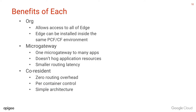Each of these different plans has different benefits. The org plan allows you to have access to all of Edge, and Edge can actually be installed inside the same Pivotal Cloud Foundry environment, which makes the actual latency a little bit less compared to going out to the cloud and back. Micro gateway allows one micro gateway to serve many different applications, doesn't hog application resources because it's a separate application, and has smaller routing latency compared to the org plan. The co-resident plan has zero routing overhead, per container control, simple architecture, and is much easier to understand than how a request would flow through micro gateway or the org plan.